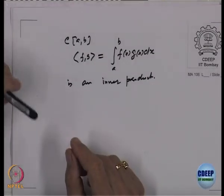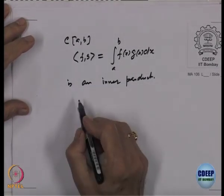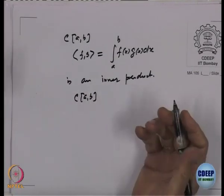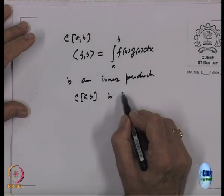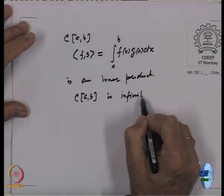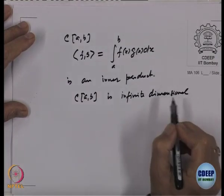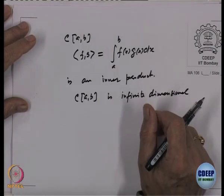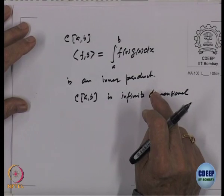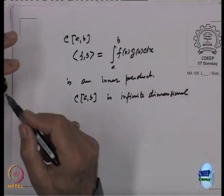C[A,B] is a vector space over the reals, and as we have shown earlier, it is infinite dimensional. So we have an infinite-dimensional vector space on which a notion of inner product is also defined.